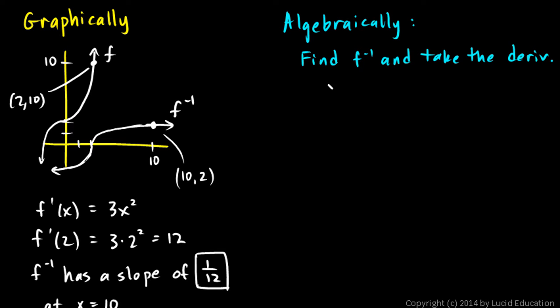So the function was y equals x cubed plus 2. So let's say x equals y cubed plus 2 and solve this for y. So x minus 2 is y cubed. So y is x minus 2, the cube root of that, so x minus 2 to the 1/3.